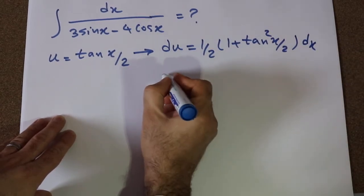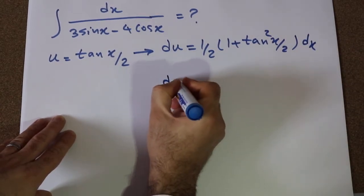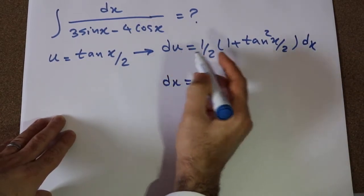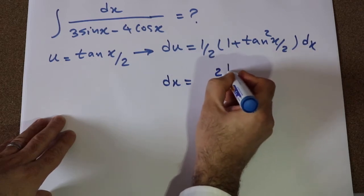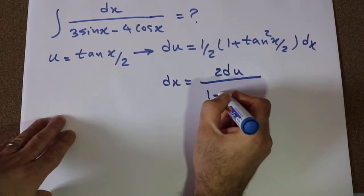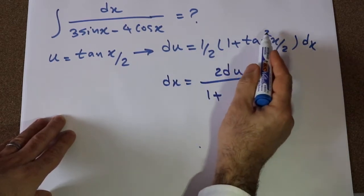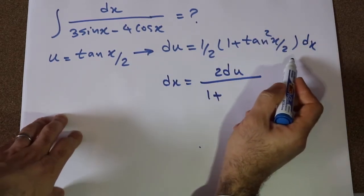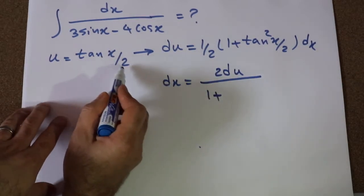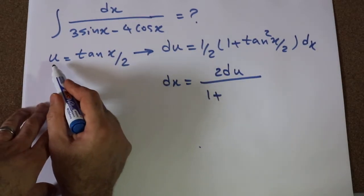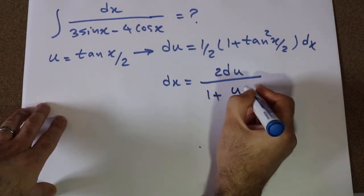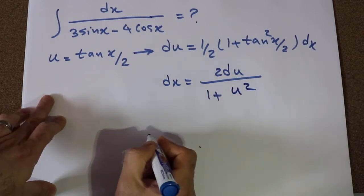From this equation, you can conclude that dx will be equal to 2du divided by 1 plus tangent squared x divided by 2. We know that tangent x divided by 2 is u, therefore tangent squared will be equal to u².